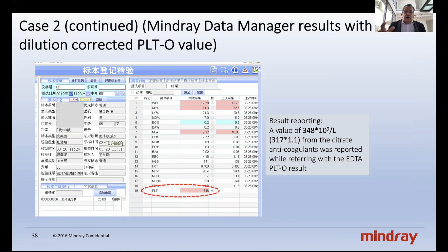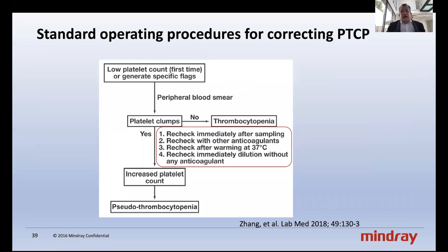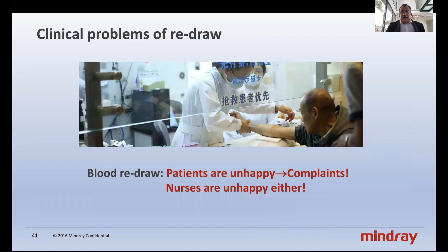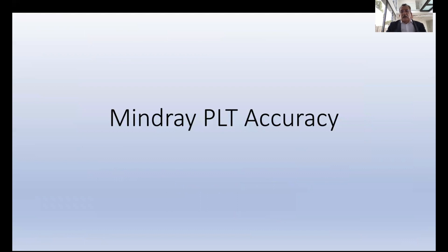If you use citrate, you need to apply a correction factor — in this case 1.1 — to account for the sample dilution with citrate. Regarding time cost, the schematic published by Zhang shows that rechecking with other anticoagulants and warming takes 45 minutes per pseudothrombocytopenia case. With the Mindray optical method, the time lost is only one minute. This also means patients won't require a redraw, making both patients and nurses happier.